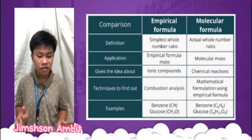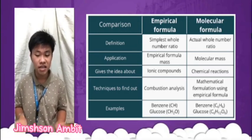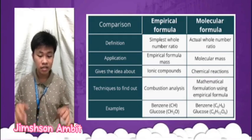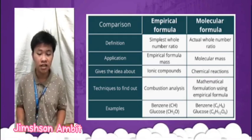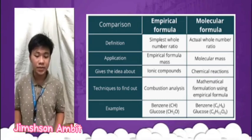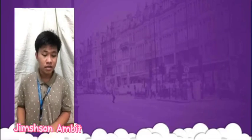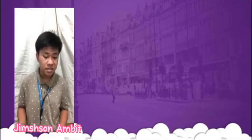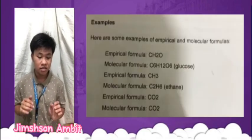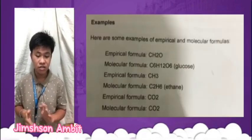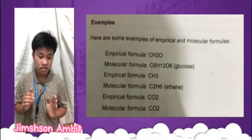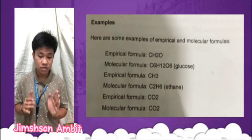The molecular formula is always a multiple of the empirical formula, so the molecular formula can be found by multiplying the subscripts of the empirical formula by the appropriate integer. For example, the empirical formula is CH2O and the molecular formula is C6H12O6 for glucose.